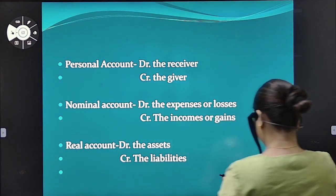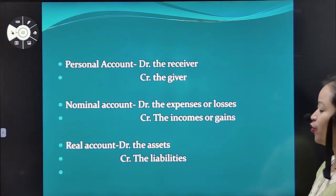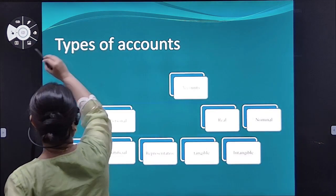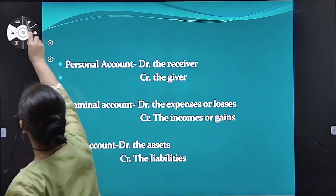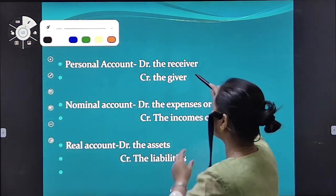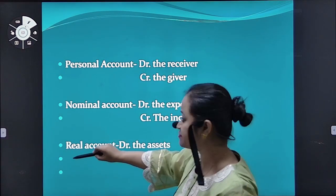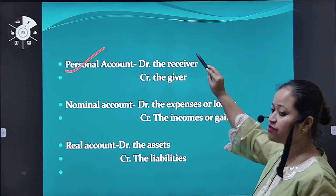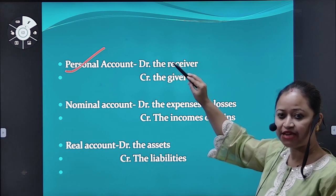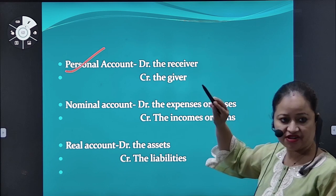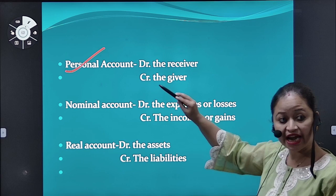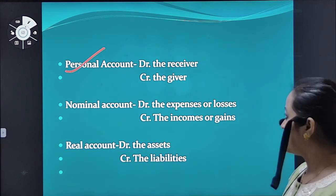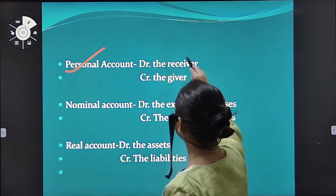Now we'll see the traditional rule of debit and credit. There are three types of accounts with their rules. For personal account the rule is: debit the receiver and credit the giver. Write down these rules — it will be easier when I explain how to do journal entries. So for personal account: debit the receiver, credit the giver.